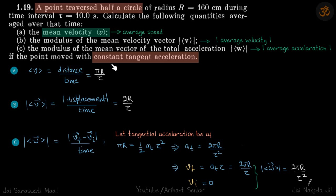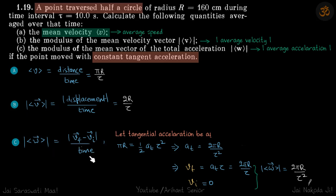Third, he is asking for average acceleration, given that the point moved with a constant tangential acceleration. This condition is given so we can find the final velocity, because for average acceleration we need the final and initial velocities. The average acceleration equals final velocity minus initial velocity divided by time. Let the tangential acceleration be a_t, which is a constant, and the initial velocity is zero.